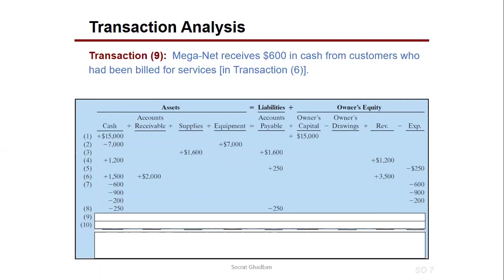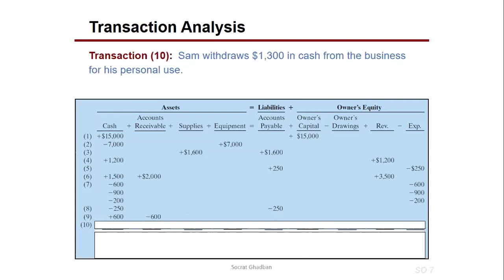Transaction 9: MEGANET receives $600 in cash from customers who were previously billed in transaction 6. In transaction 6, $2,000 remained in accounts receivable. Now that $600 has been collected, cash increases by $600 and accounts receivable decreases by $600.